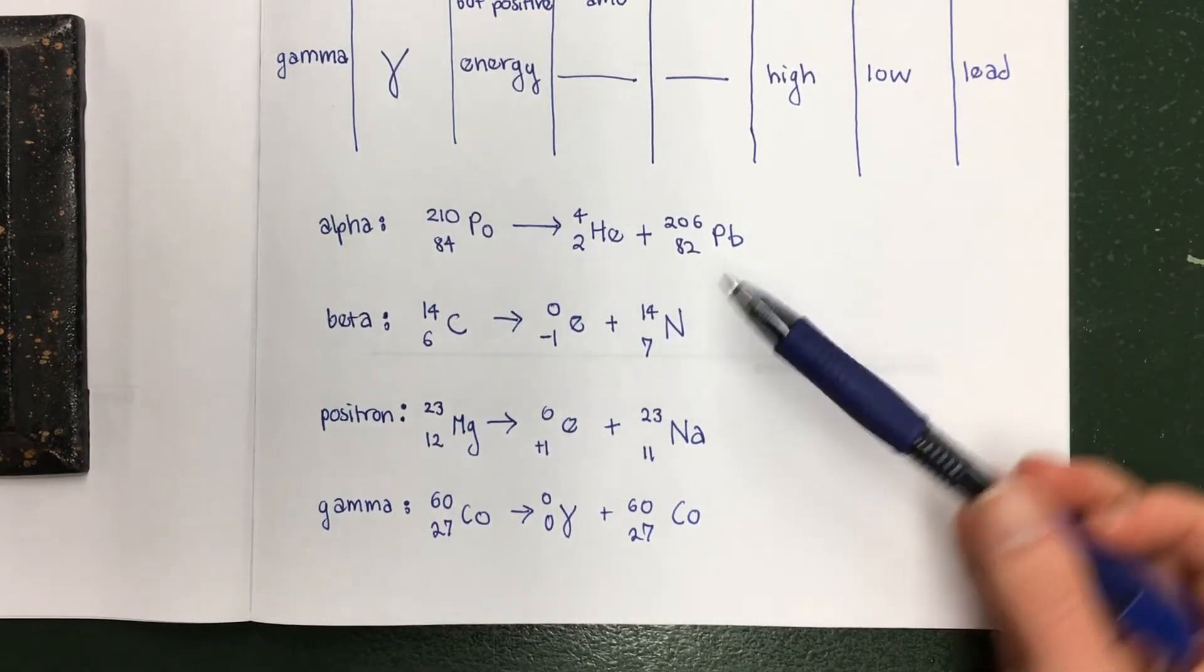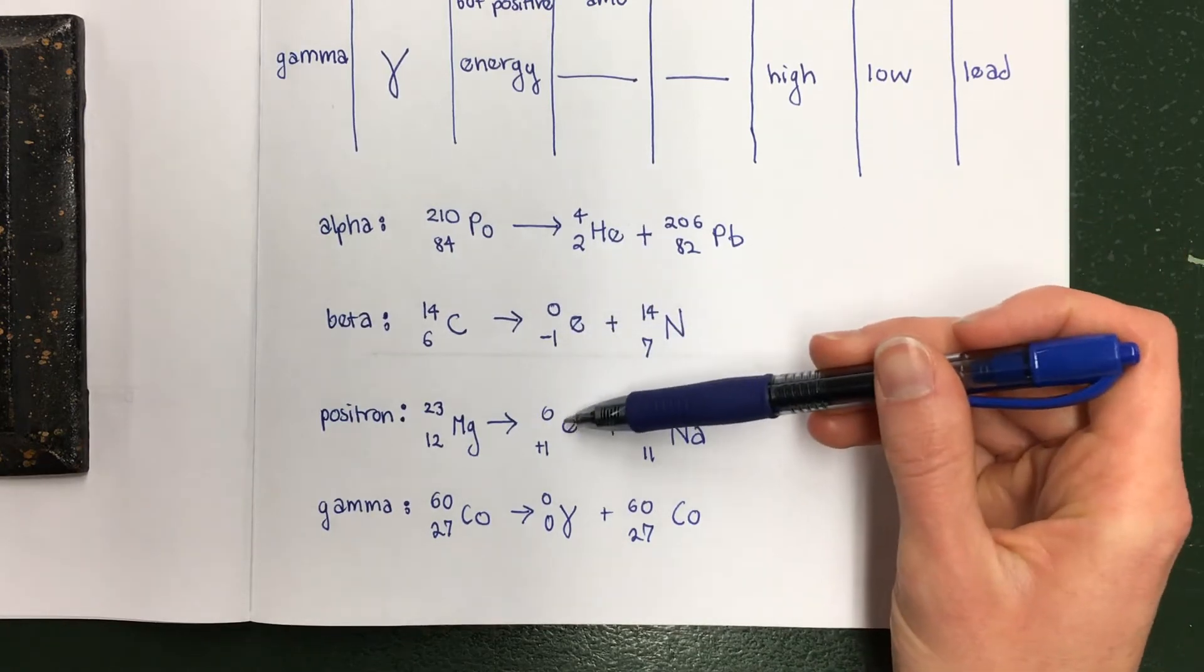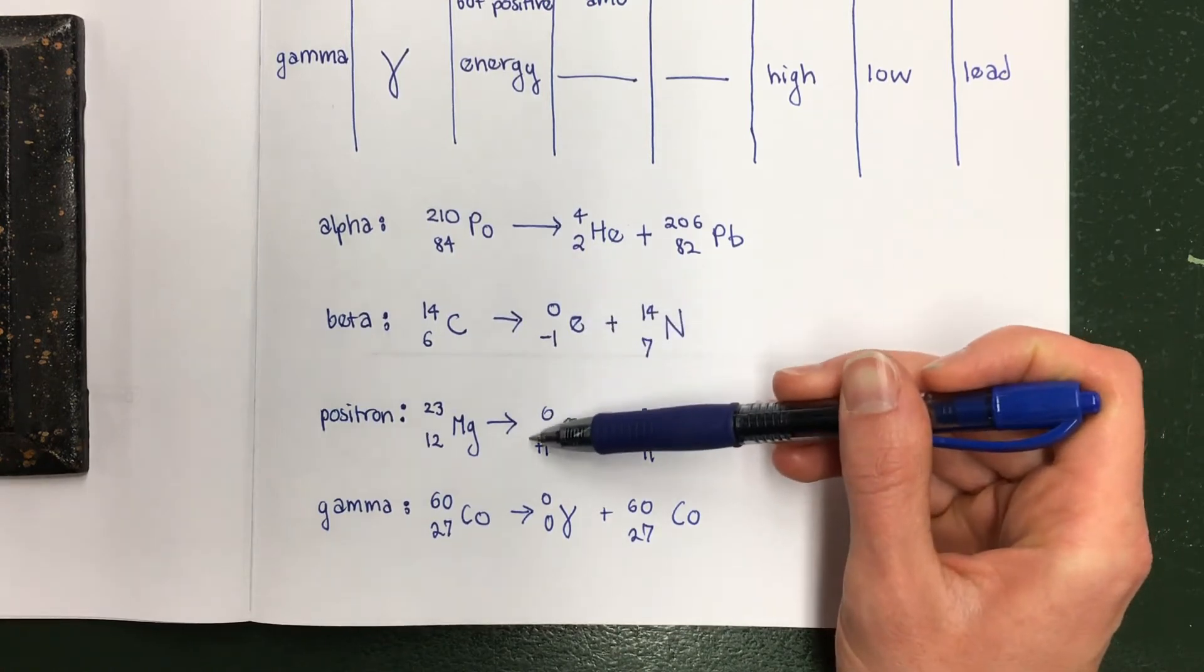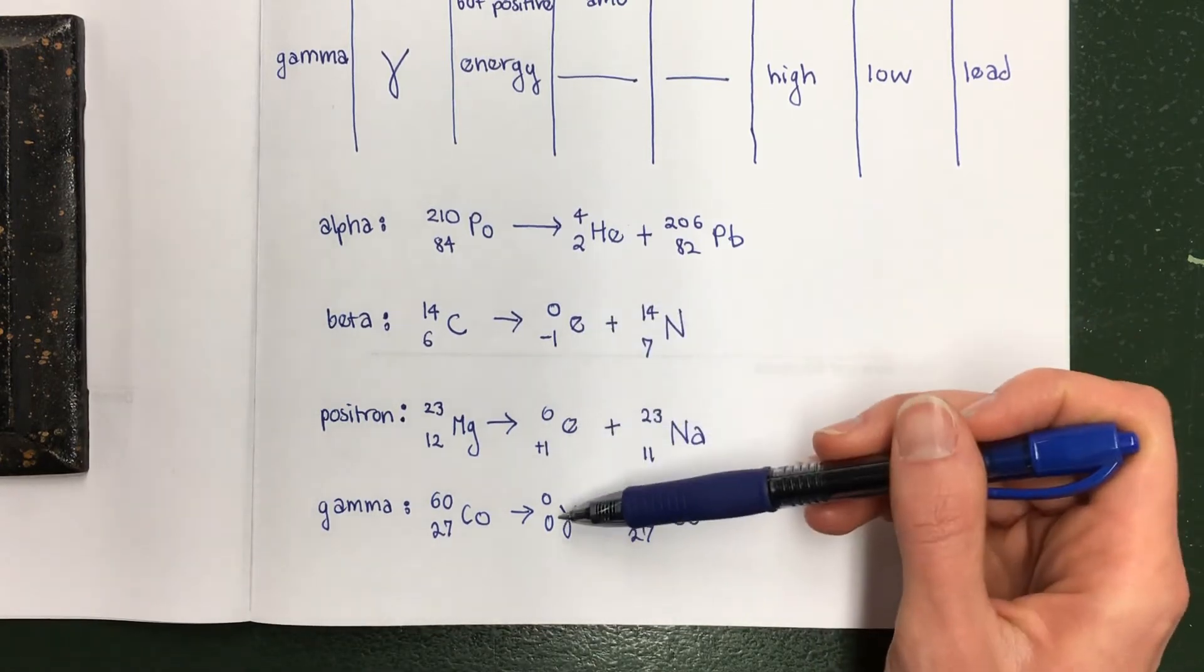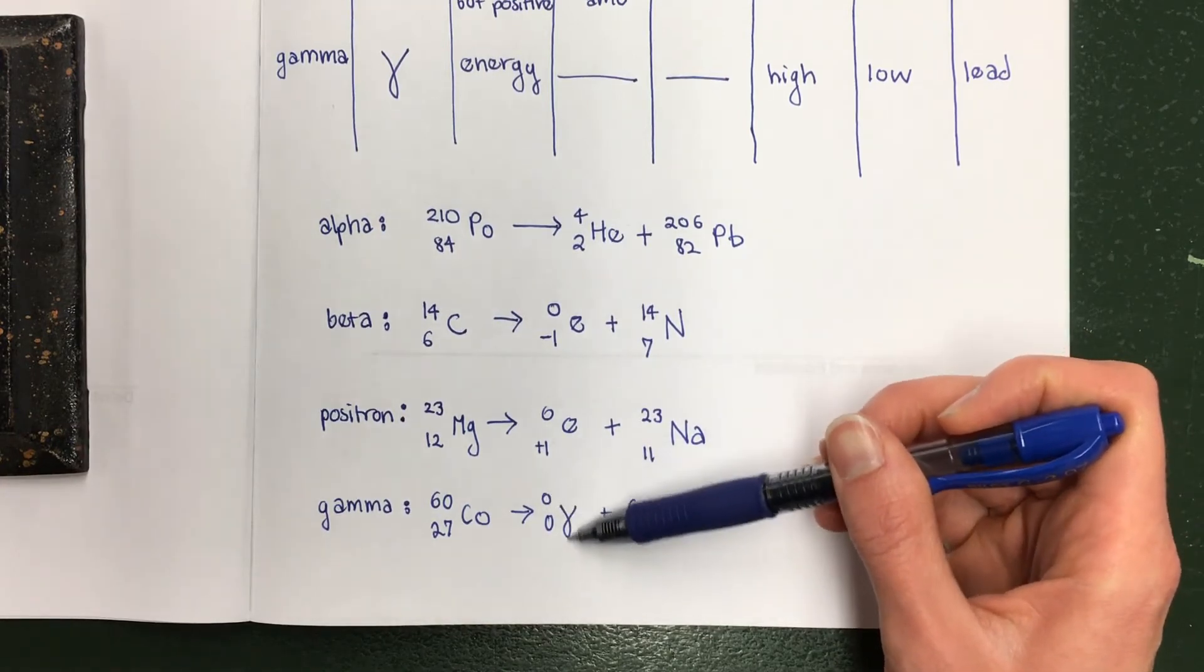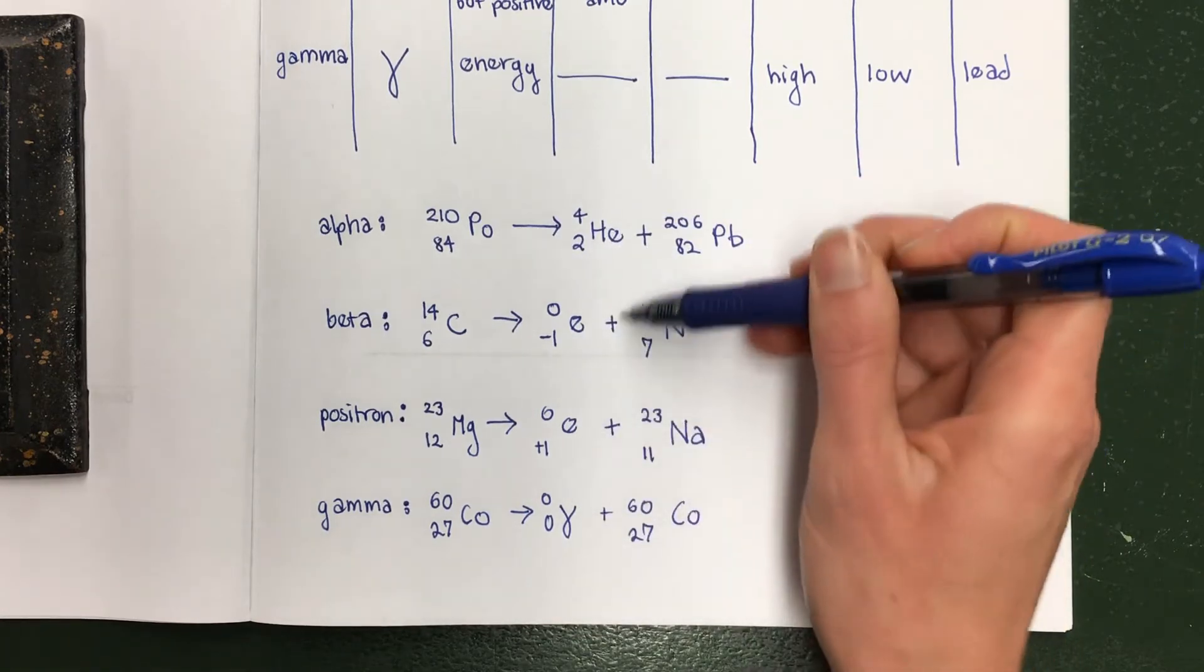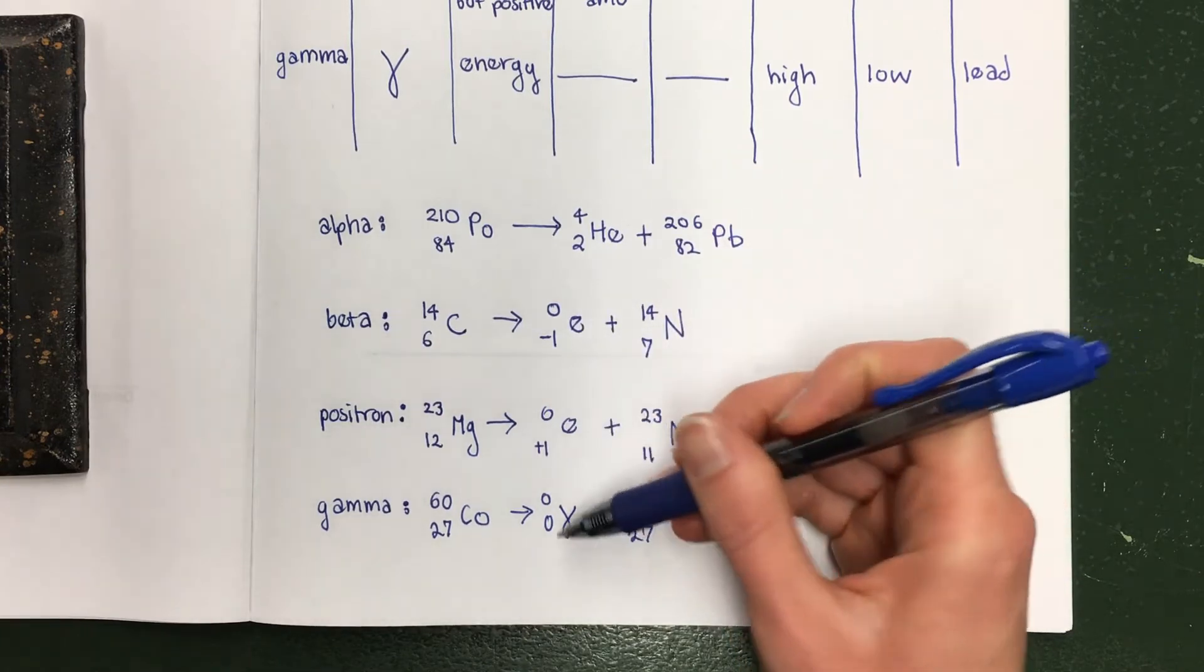Sorry that video cut off. So the other two types of decay that you need to be able to recognize are positron emission. The difference between a beta decay and positron emission is that you're going to have a negative one charge down here if it's beta, but a positive one charge down here if it's positron emission. But the symbol will look the same. And then gamma, you're going to see a gamma particle, or a gamma ray I guess, not a particle, with zero mass and zero charge. All of these will be on the right side of the equation.